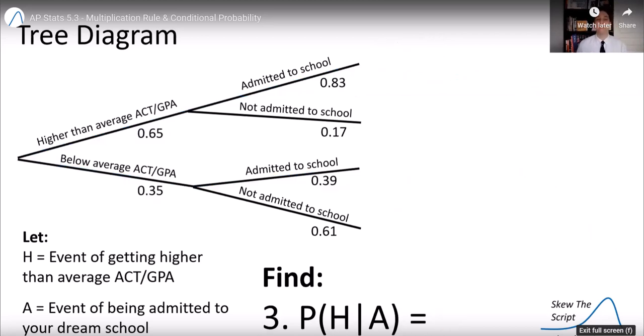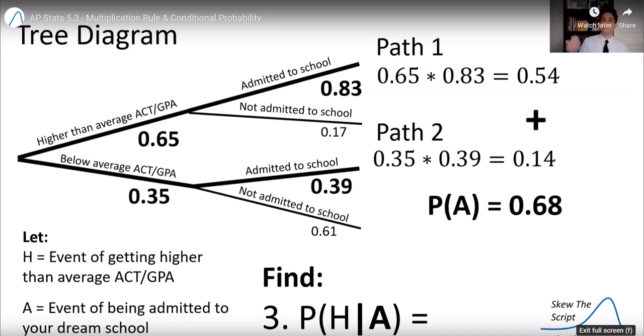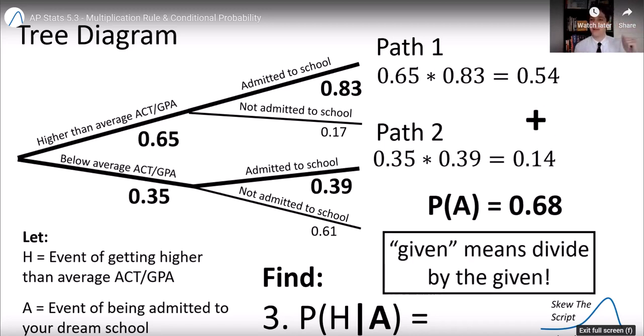Now let's find the probability of a condition. The probability of having attained a higher than average ACT GPA given you were admitted to your dream school. We found, looking at the given first, that the probability of being admitted to the school was 68%. We just found that out in our last problem. So that is the given. The probability of the given happening being admitted to the school was 68%. Remember, given means divide by the given. So I'm going to divide by 68%. I'm scaling the probability by the chance of the given.